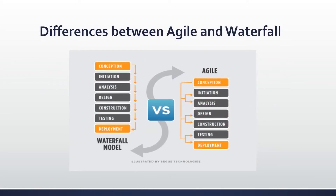Now that we've talked about agile and waterfall, let's look at the differences between them. Both methodologies can help a development team produce high quality software, but knowing the differences can better equip a team to choose the right process. Agile is an incremental and iterative approach while waterfall is a linear and sequential approach. Agile separates a project into sprints; waterfall divides a project into phases. Agile helps complete many small projects; waterfall helps complete one single project. Agile introduces a product mindset focused on customer satisfaction, while waterfall introduces a project mindset focused on successful project delivery.